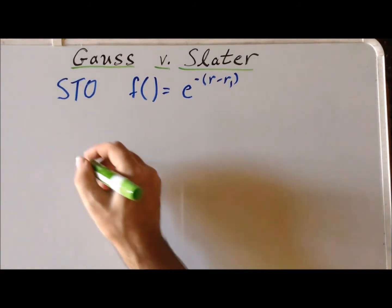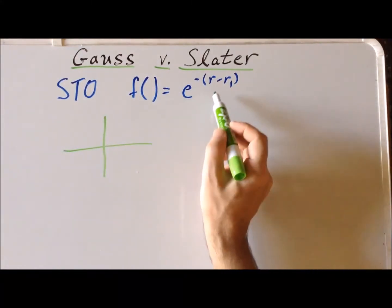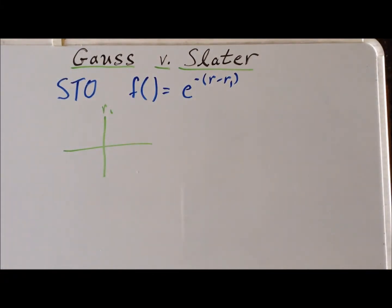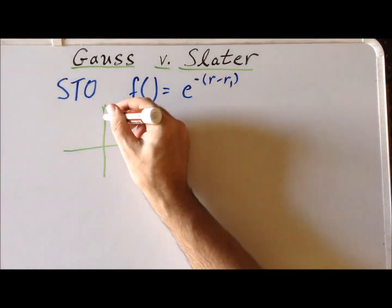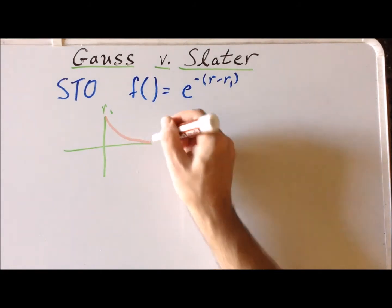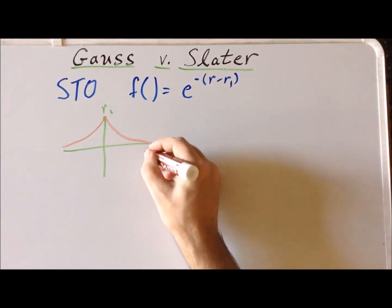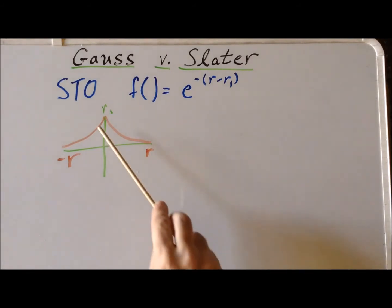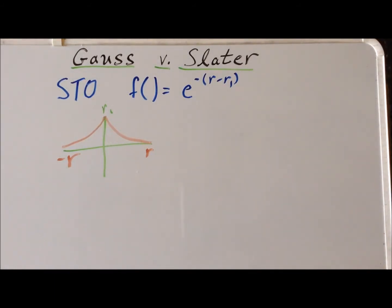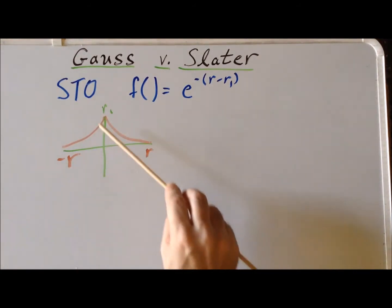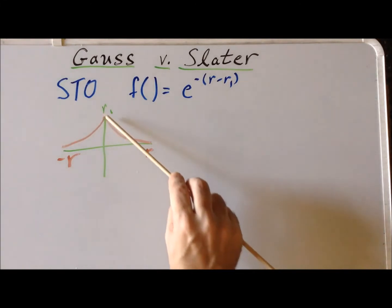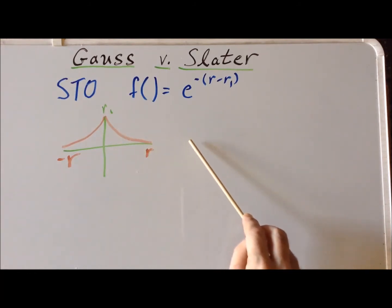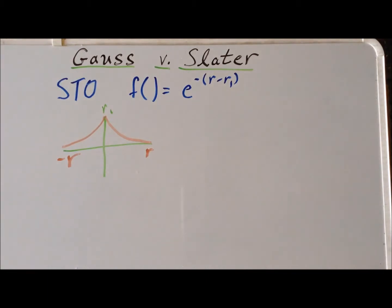If we make a quick sketch of this type of function, we notice that the function is centered at r equals r1 — the location of a nucleus, for example. It has a very peculiar shape: a decaying exponential in both the positive r and the minus r directions. We notice a very important feature: it has a cusp, coming to a point, because in S-type orbitals the electron has a non-zero probability of being at the center and is most likely to be as close to the nucleus as possible.